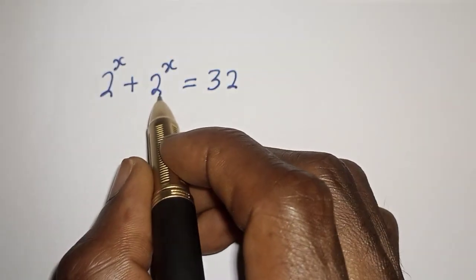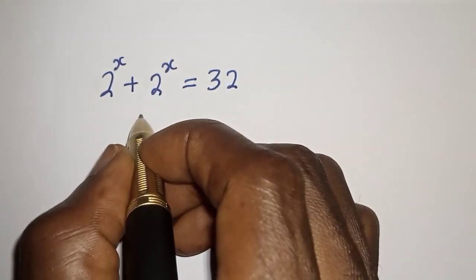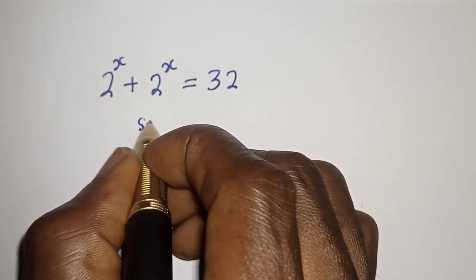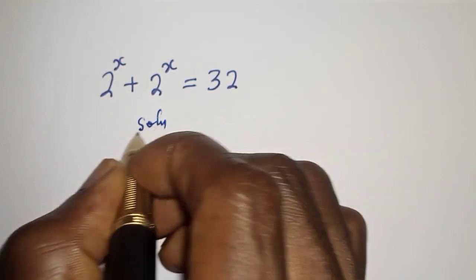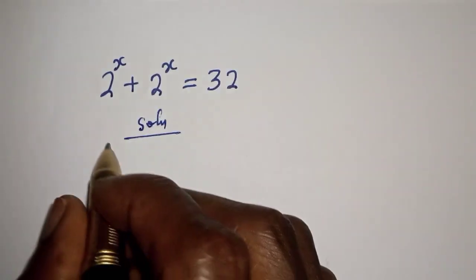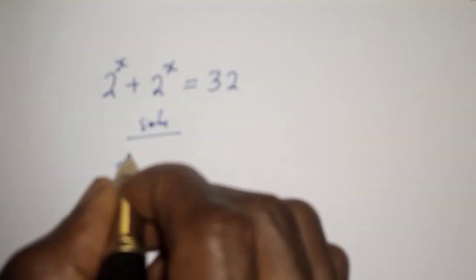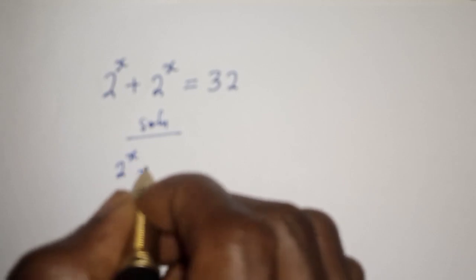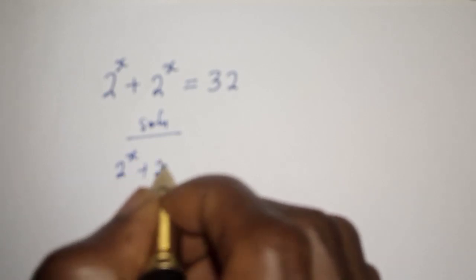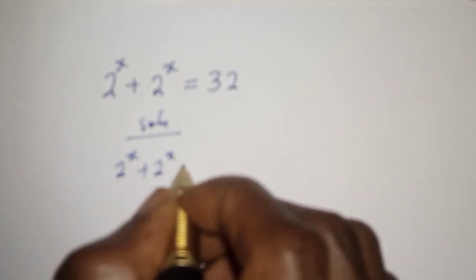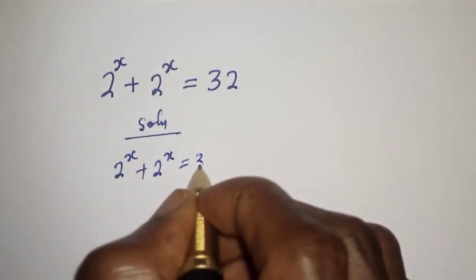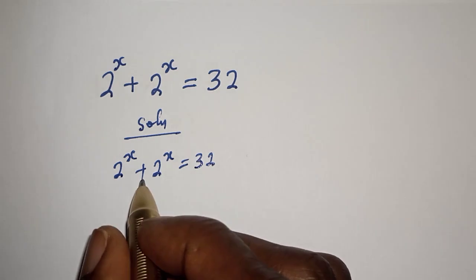Like, share, comment and subscribe. Solution: 2 raised to power s plus 2 raised to power s is equal to 32.